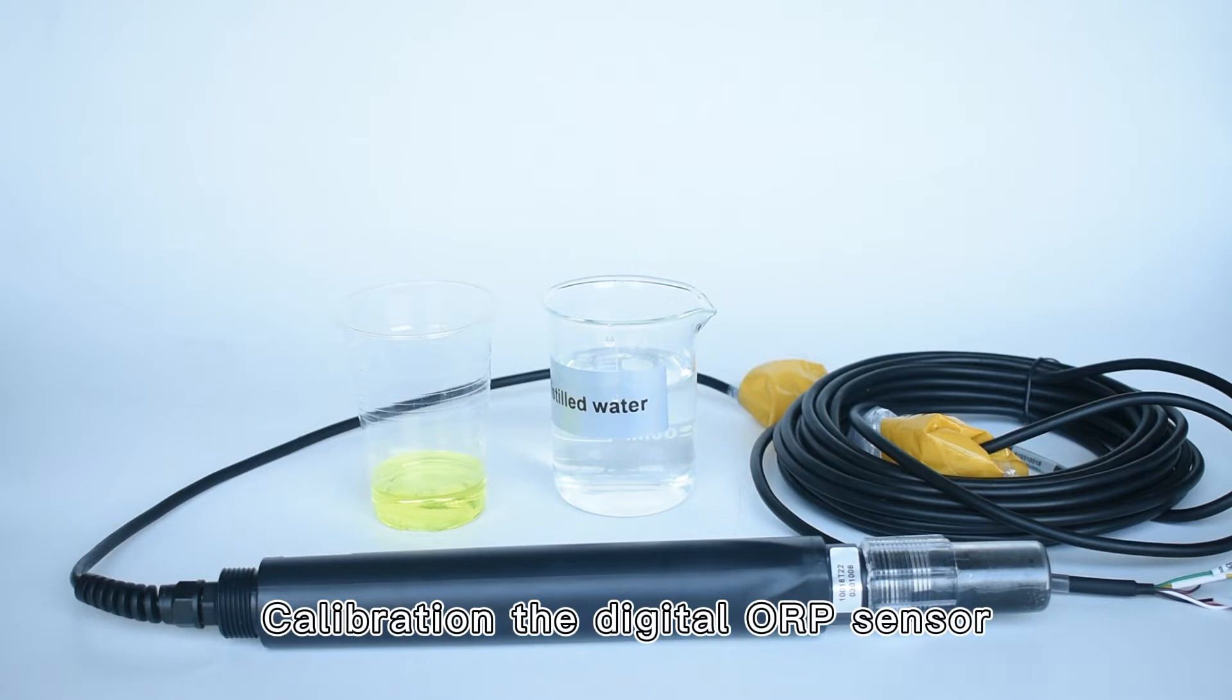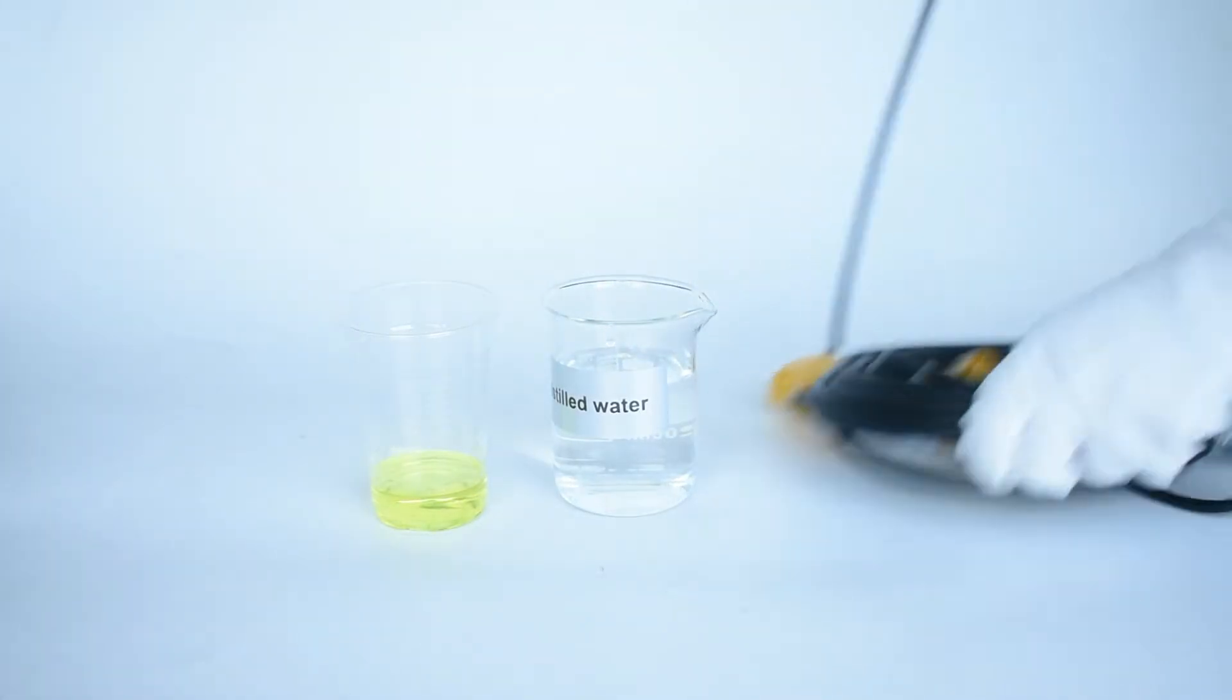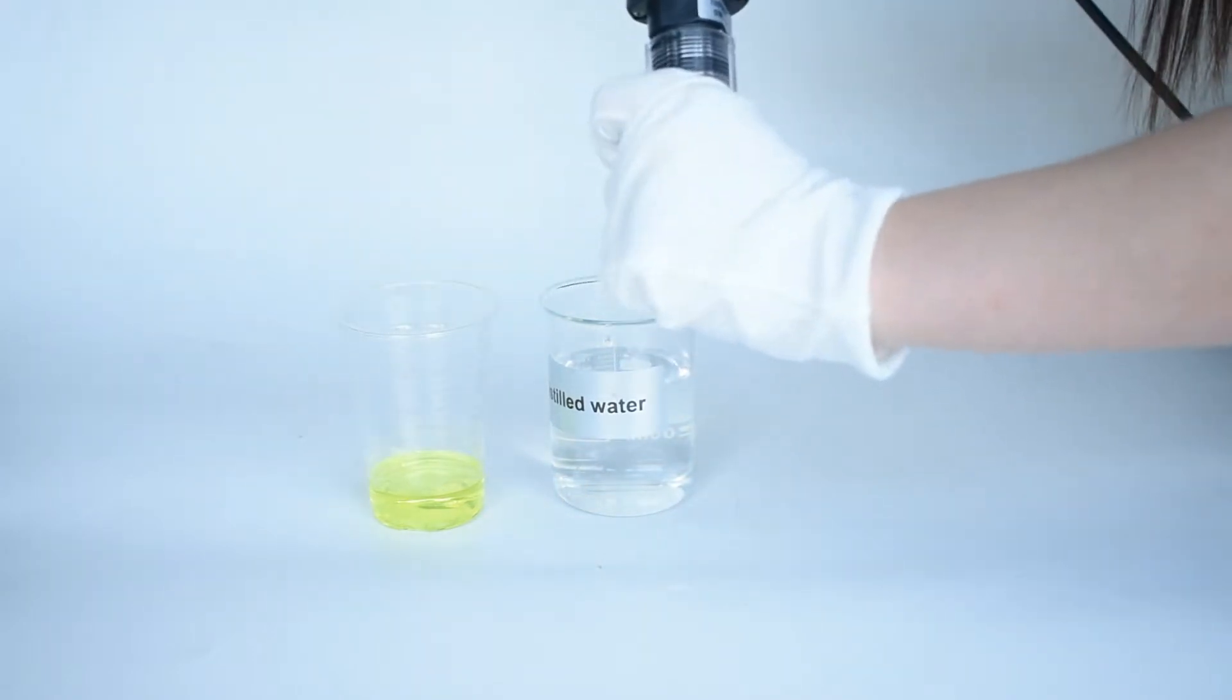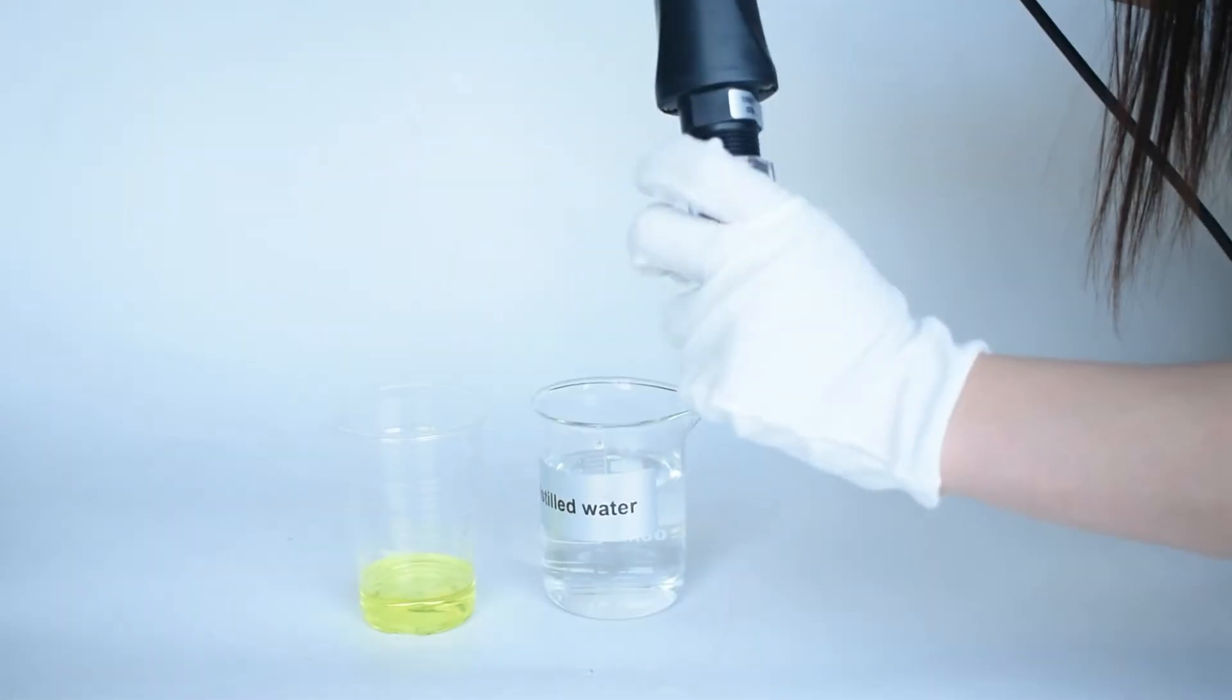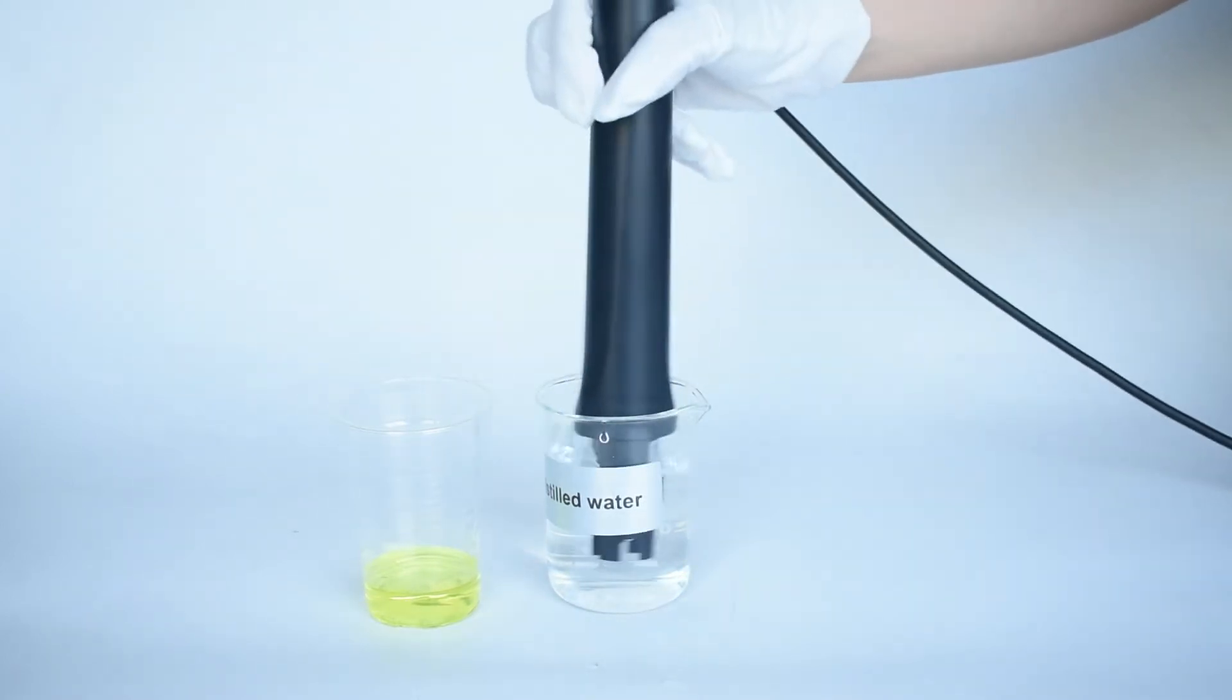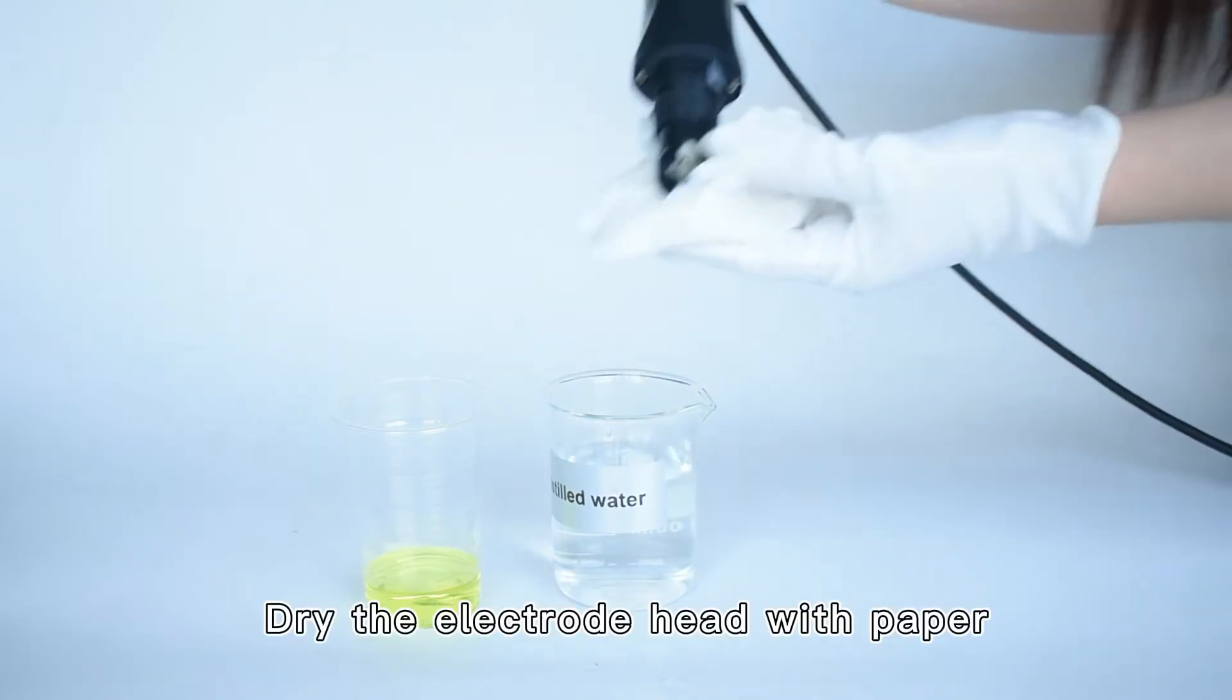Calibration of the digital ORP sensor. First, clean the electrode head with distilled water. Dry the electrode head with paper.